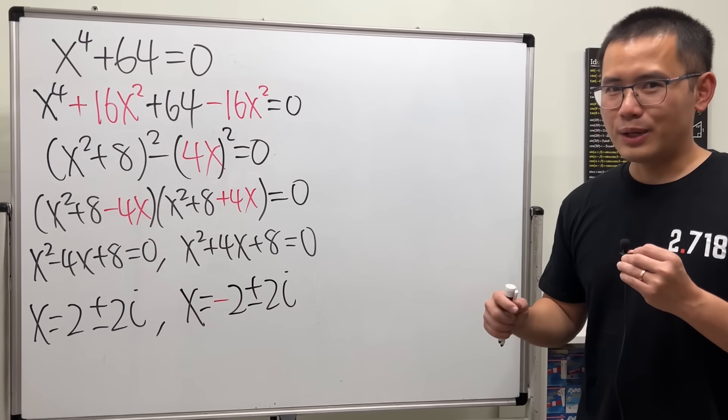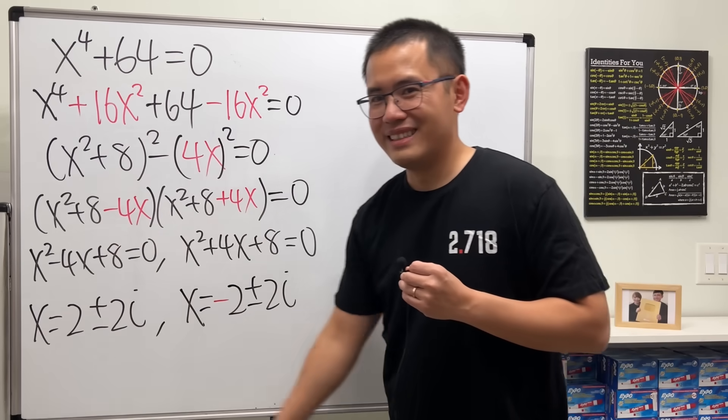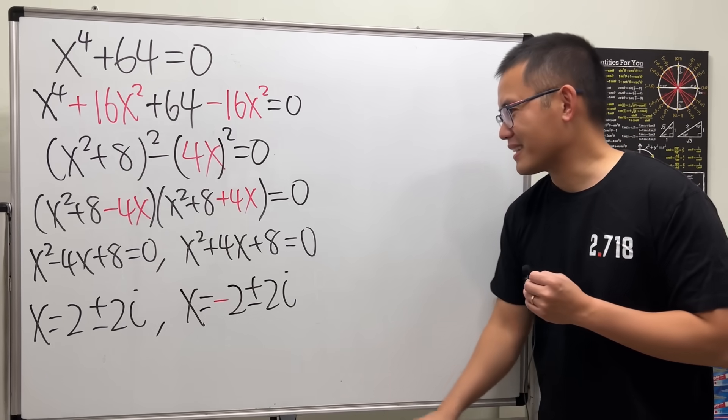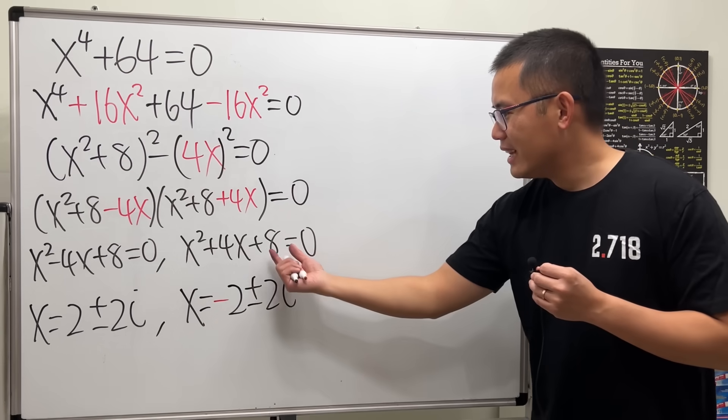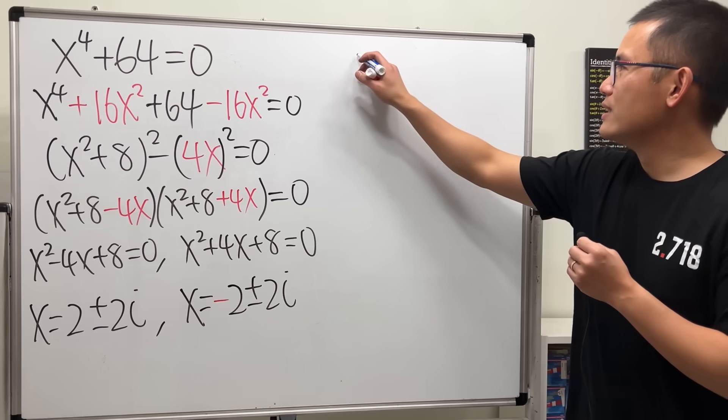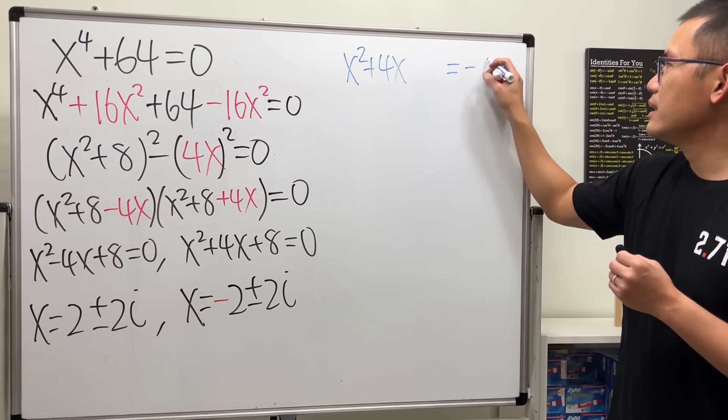But, I wanted to show you guys how to complete the square again for this, assuming we didn't do that, right? So, that way I can show you guys all the techniques. All right, to complete the square, let's put the 8 to the other side. So, we get x squared plus 4x equals negative 8.